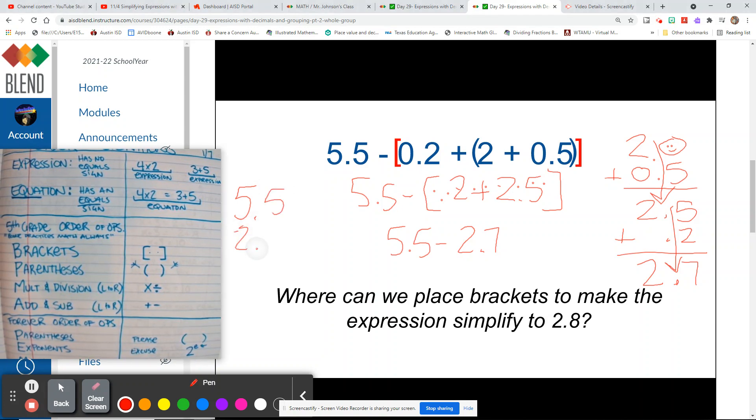Minus 2.7, so I have to borrow. 15 minus 7 is 8, 4 minus 2 is 2, so I drop my decimal point. Looks like it works.